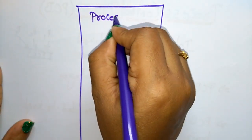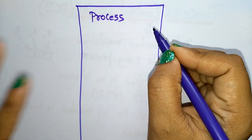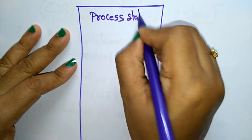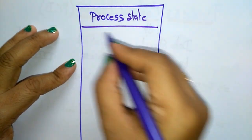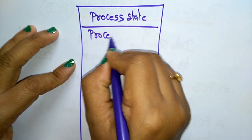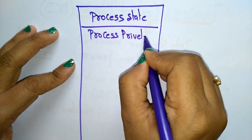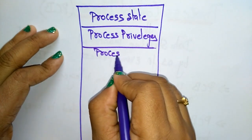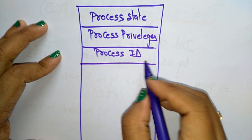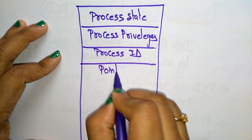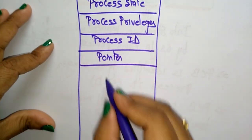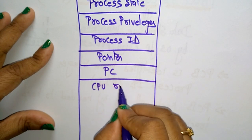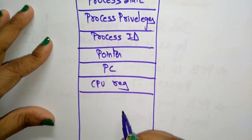Regarding a single process, the Process Control Block will store information like: process state, process privileges, process ID, pointer, program counter, and CPU registers used for the process.